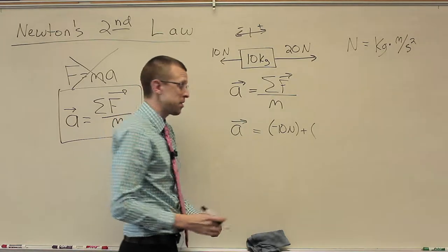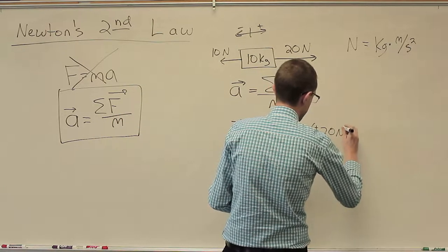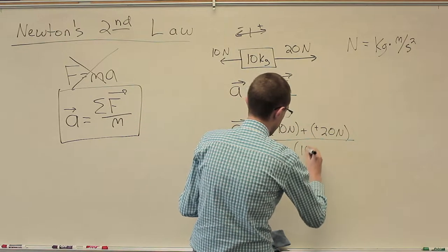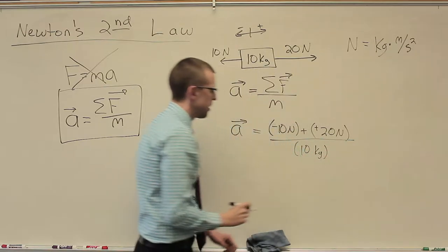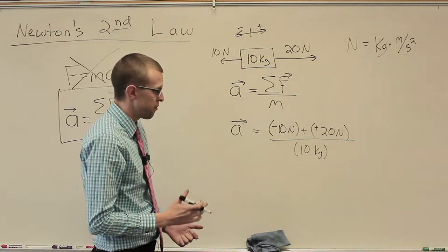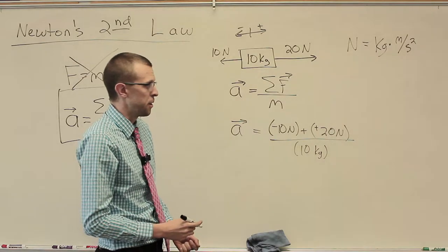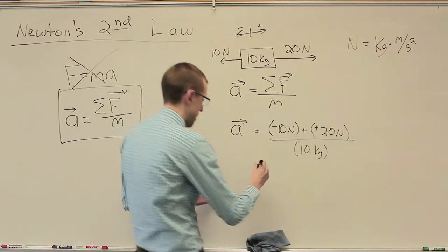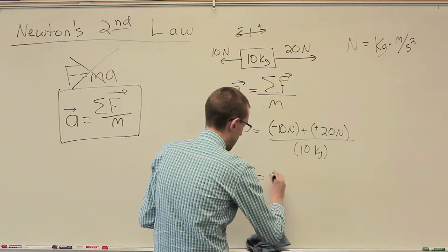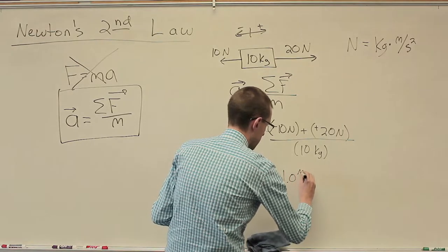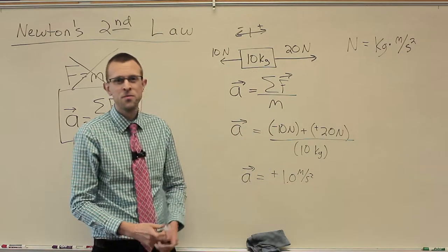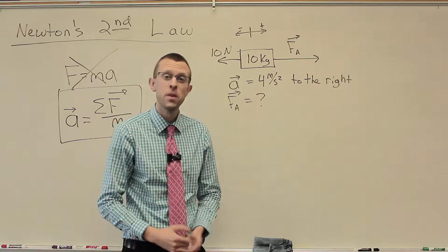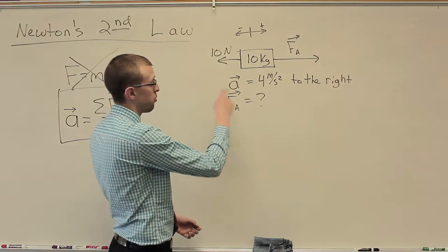My net force, remember it just means all the forces added together. Here I've got 10 Newtons, and that's in the negative direction. And I've got 20 Newtons in the positive direction. Divided by the mass, which was 10 kilograms. Negative 10 Newtons plus 20 Newtons gives us positive 10 Newtons divided by 10 kilograms. Remember, kilogram meters per second squared is the long way to write Newtons. This is going to give me an acceleration of positive 1.0 meters per second squared.